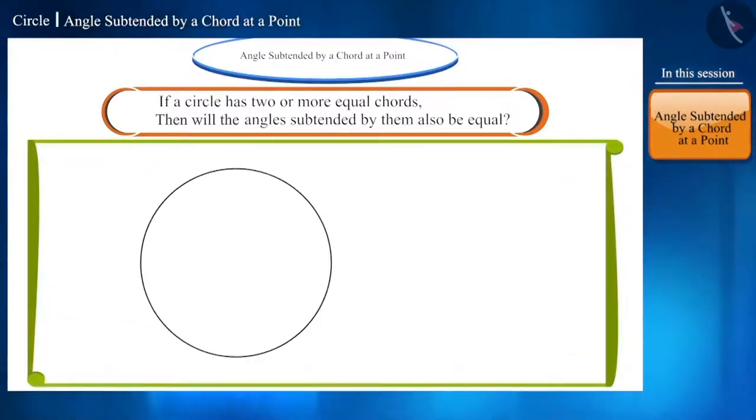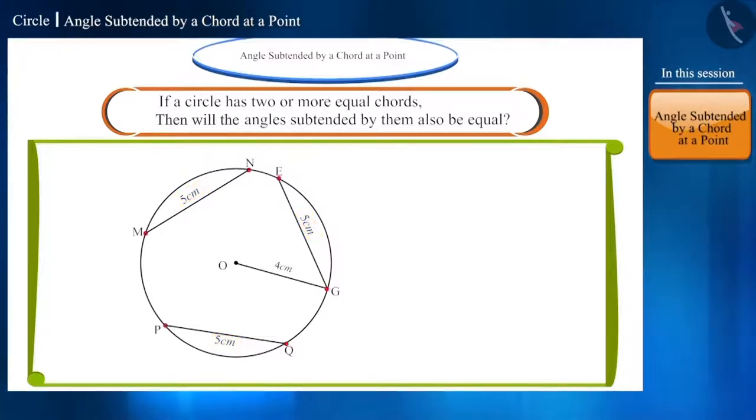Draw a circle whose center is O and the radius is 4 cm. Now make three chords PQ, MN, and GE which measure 5 cm. And join these points with the center O in this way.